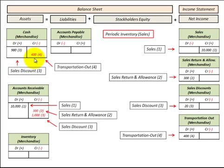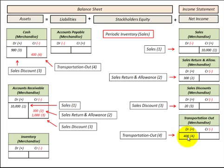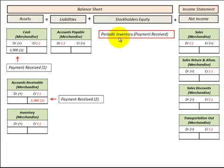Let's look at transportation out. Say it costs us $400 to ship goods out: we credit cash and reduce it by $400, and we debit Transportation Out and increase it by $400. Next, for a payment received on accounts receivable, say $1,500.